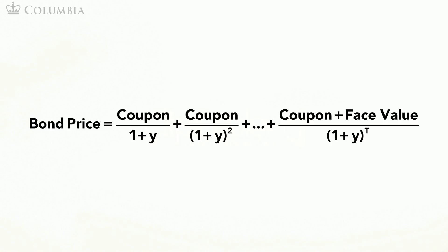Note that to compute the yield of a bond, you only need information about future payments and the current market price. The information you need to compute future payments — that is, the coupon rate, the face value, and payment frequency — can be found on the bond certificate. The current bond price moves around, but you can look it up online at any time.